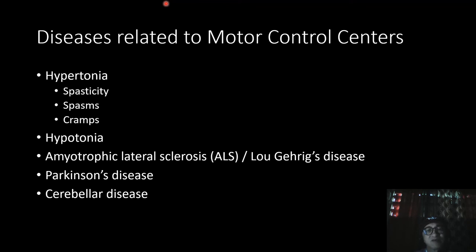Amyotrophic lateral sclerosis, or ALS, also known as Lou Gehrig's disease, is a lower motor neuron condition in which progressive degeneration of alpha motor neurons causes hypotonia and atrophy of skeletal muscles. Parkinson's disease is characterized by a reduced amount of movement called akinesia, and slow movements called bradykinesia. Muscular rigidity and tremor at rest are due to degeneration of neurons at the substantia nigra, which is a brainstem nucleus.